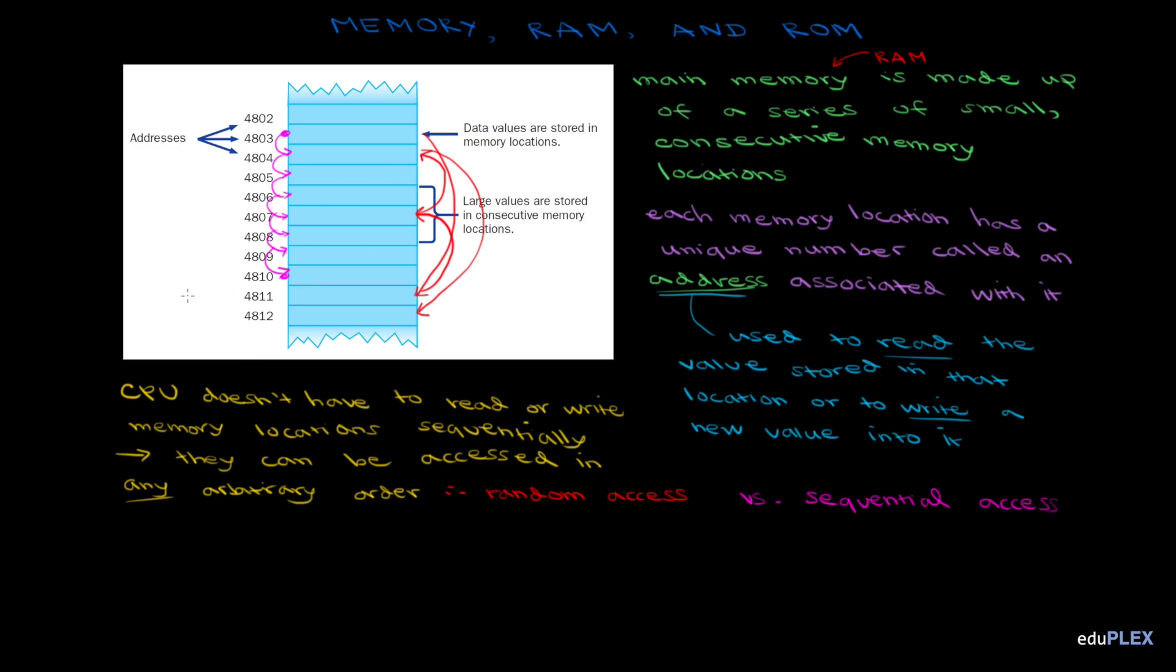When we store or write some data into a memory location, it overwrites and basically destroys any information that was previously being stored there. Essentially, two pieces of data can't be stored at the same address. They each need their own. When we're reading data though, it doesn't do anything to the memory location since you're just getting the value of the data. Nothing will change.